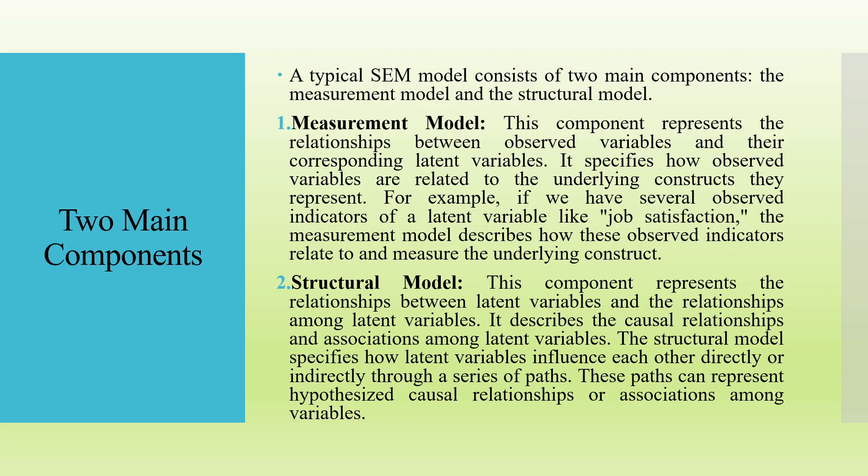A typical SEM model consists of two main components: the measurement model and the structural model. The measurement model represents the relationship between the observed variables and their corresponding latent variables. It specifies how observed variables are related to the underlying constructs they represent. For example, if we have several observed indicators of a latent variable like job satisfaction, the measurement model describes how these observed indicators relate to and measure the underlying construct.